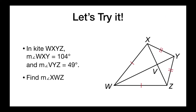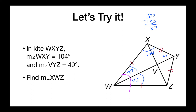Now we have to find angle XWZ. There are a couple of ways to do this. Using the information we have: if WXY is 104 and VYZ is 49, then 104 plus 49 is 153, and 180 minus 153 gives us 27 degrees for this part. Because the kite has congruent angles, this part is also 27 degrees, so 27 plus 27 gives us 54 degrees for angle XWZ.